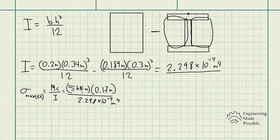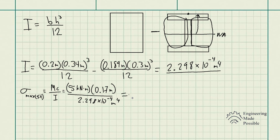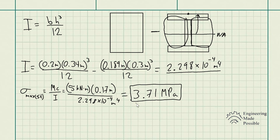For the steel, the maximum bending stress = M × c / I = 5 kN·m × 0.17 m / (2.298 × 10⁻⁴ m⁴). The distance c = 0.34 / 2 = 0.17 m, since the cross-section is symmetric. This gives a maximum bending stress in the steel of 3.71 MPa.